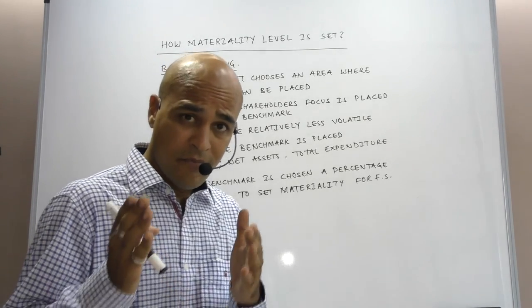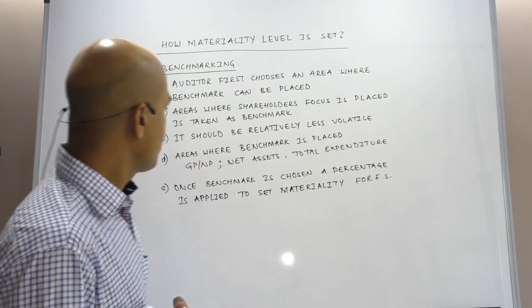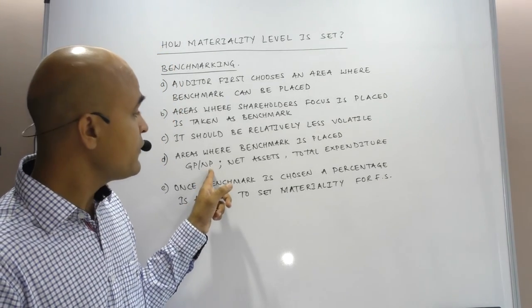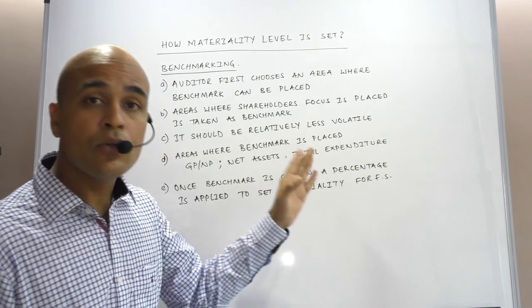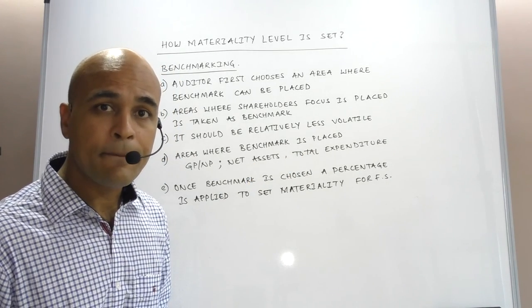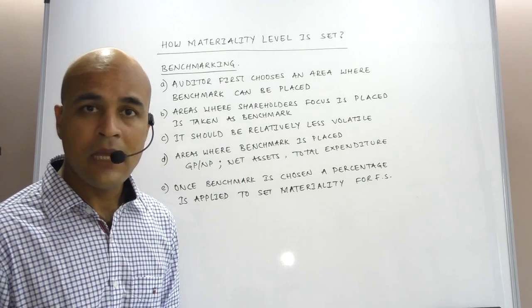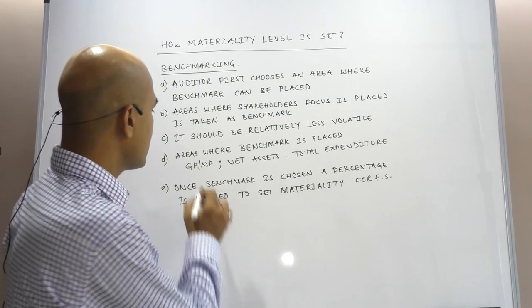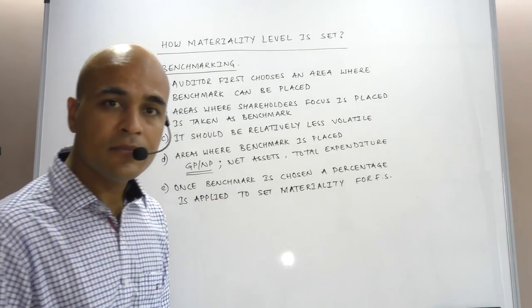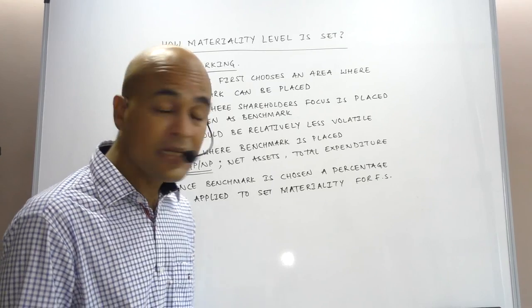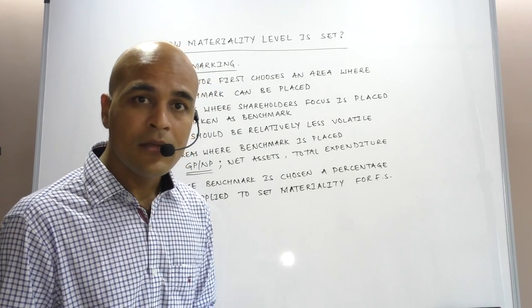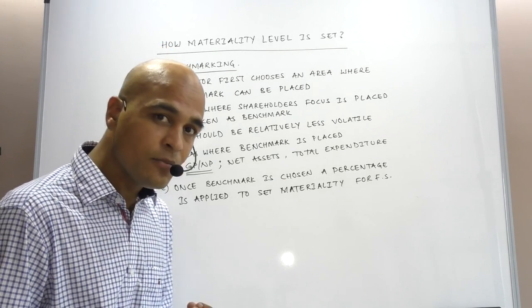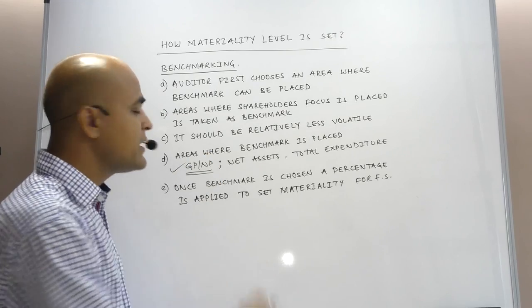The biggest question is what area to choose from. Areas where a benchmark can be placed include gross profit or net profit of the company, net assets of the company, and total expenditure of the company. The auditor can choose any one of them. The area where shareholders are attracted the most is the profitability of the company.